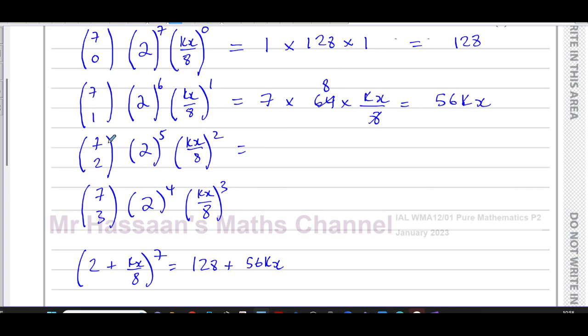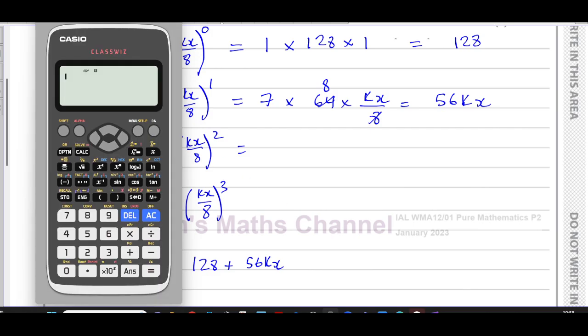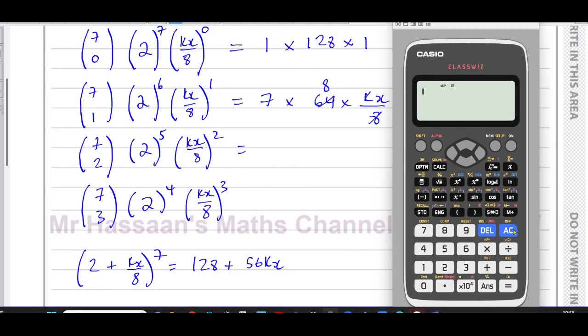Then for the next term, you're going to have 7c2. So I'm going to take the calculator now and I'm going to work out what 7c2 is. This is the button here above the division sign that we need to use. Press 7, then shift, then this division sign, we're going to press shift, we've activated this function above it, which is c and 2. That's 7c2. That will tell you the main coefficient here, which is 21.